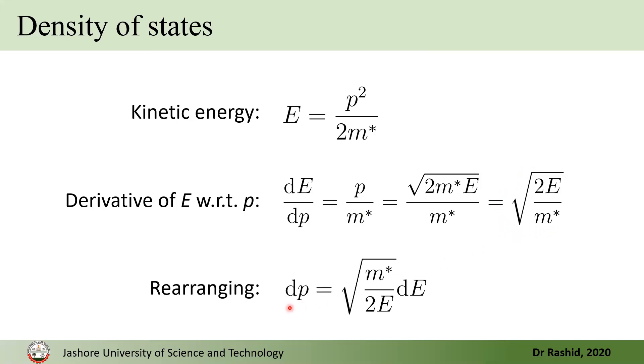So, if we rearrange it, we have dP equals this. That is, with the change of energy, dE, the momentum changes this much around E.